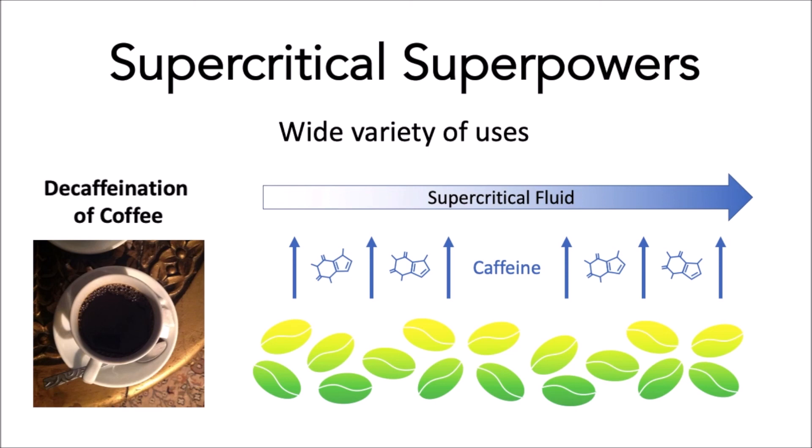If you choose a different set of temperatures and pressures, the same supercritical fluid can be used to pull out whatever you want from a different substance. For example, pulling healing compounds out of plants to make medicine. Really, the possibilities for supercritical fluids are endless.